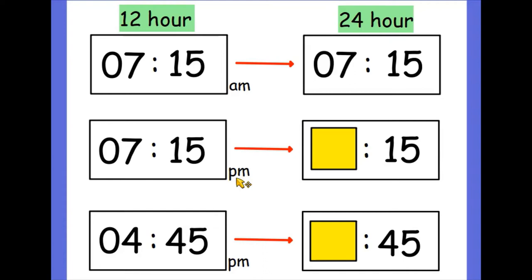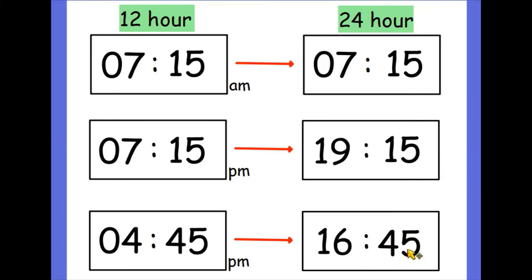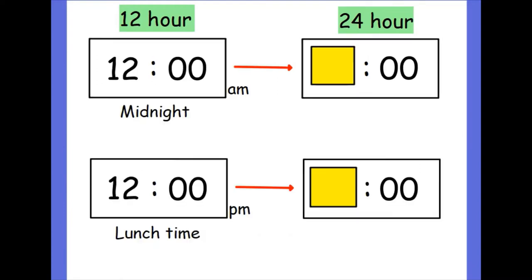When it's AM it stays the same. But if it's 7 PM, that means we've had all 12 hours of the morning, so we need to add them on. We do 7 add 12, which is 19, so it becomes 19:15. The PM told us to add 12 hours. Then the bottom example: 4:45 PM — it's PM again so we add 12 hours. 4 add 12 is 16, the minutes stay the same: 16:45.